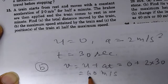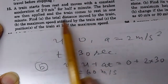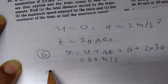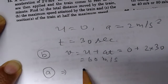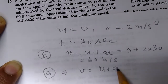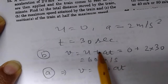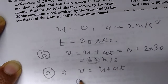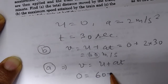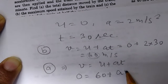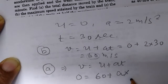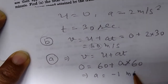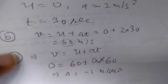For Part A, we need to find the total distance. The brakes are then applied and the train comes to rest in one minute. After the first 30 seconds, when its speed is 60 meters per second, we apply the brakes. The final velocity becomes zero, initial velocity is 60 meters per second, and it takes one minute — 60 seconds. That means the deceleration is minus one meter per second squared.